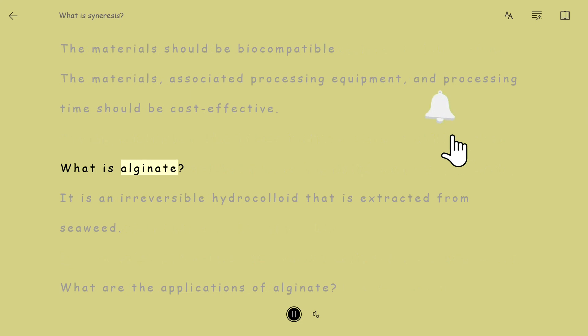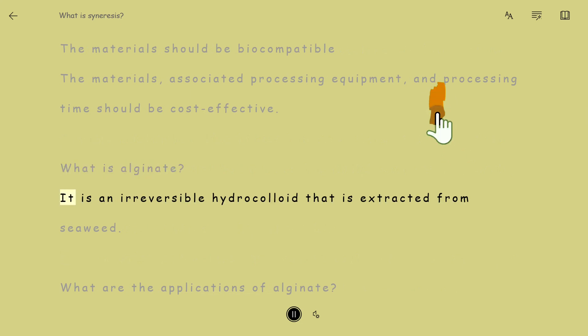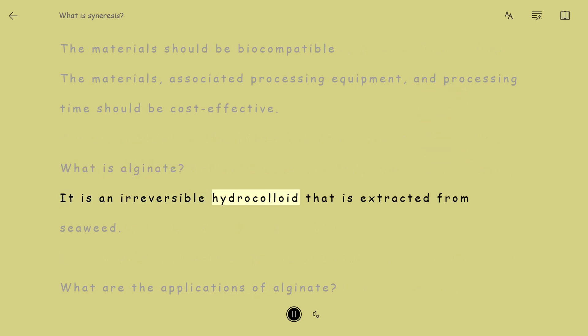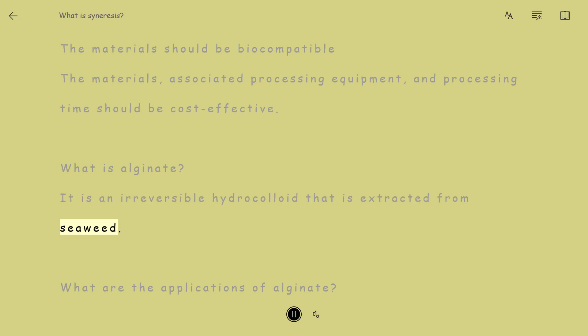What is Alginate? It is an irreversible hydrocolloid that is extracted from seaweed. What are the applications of Alginate?